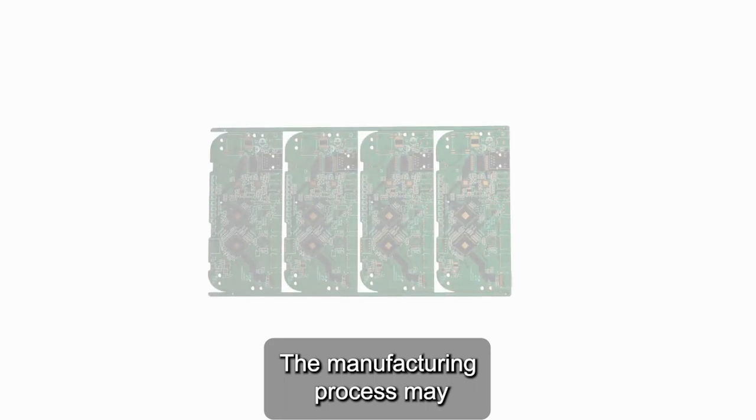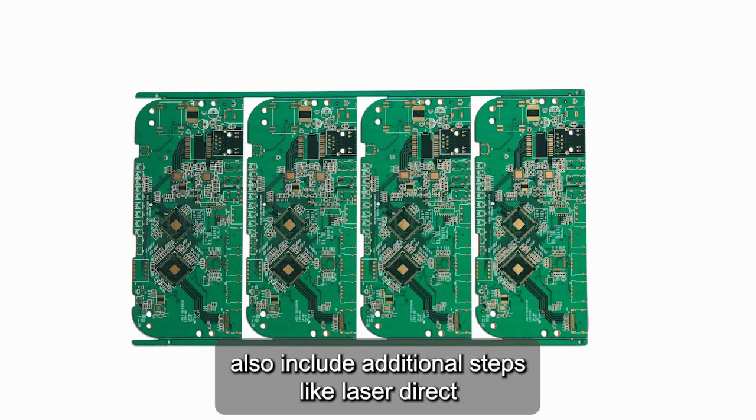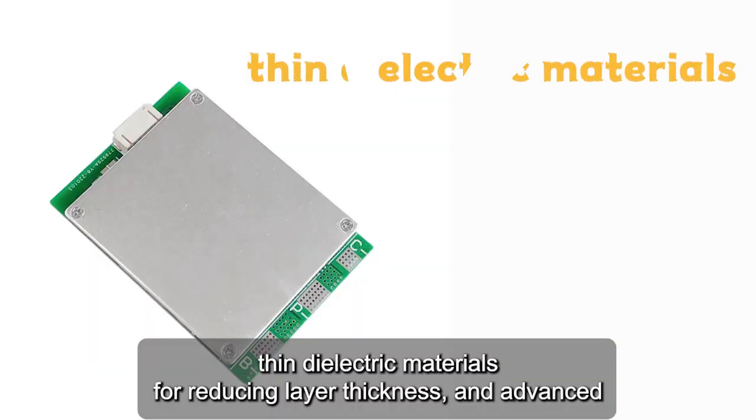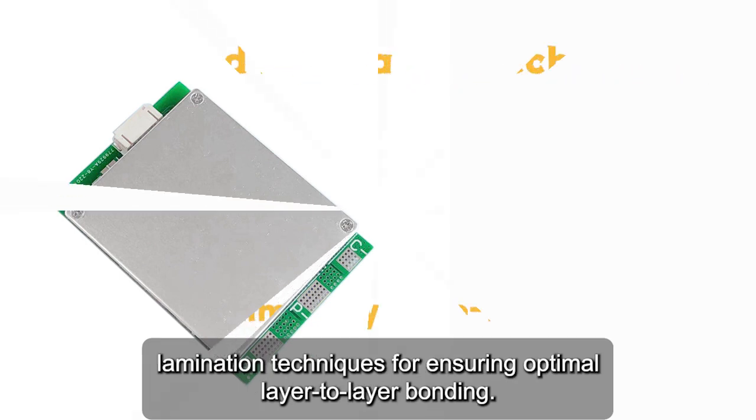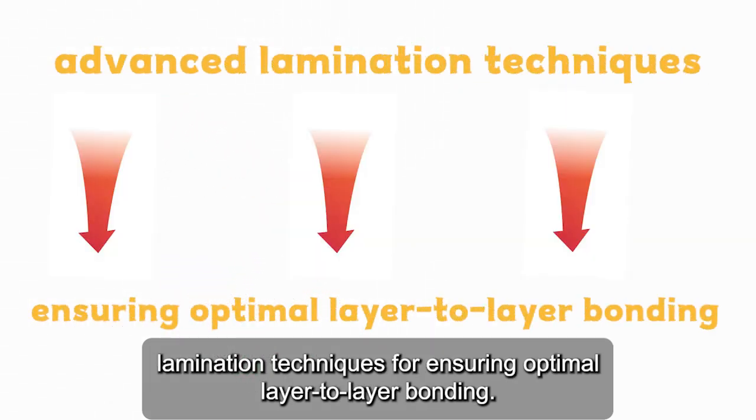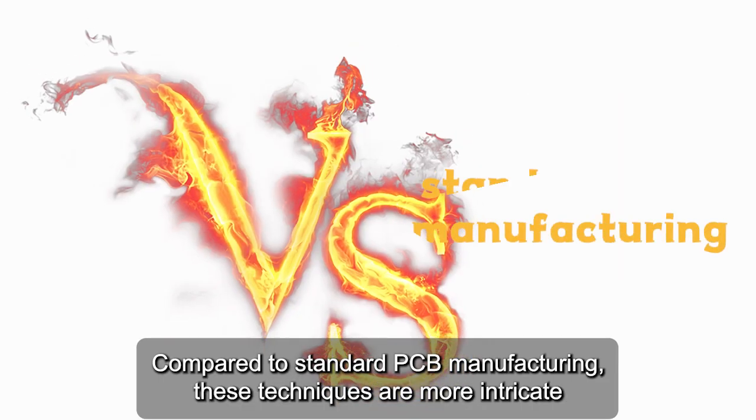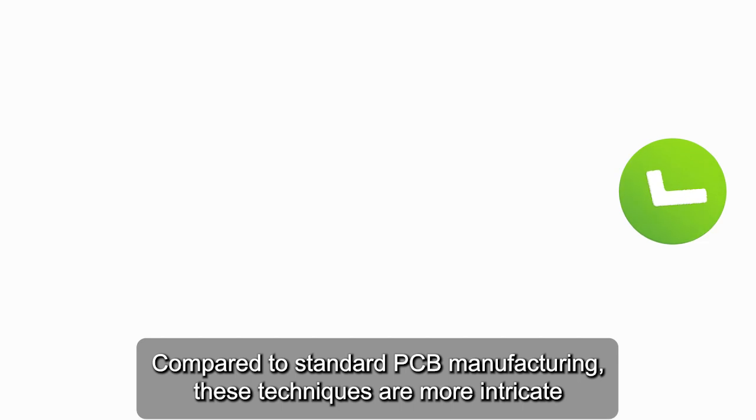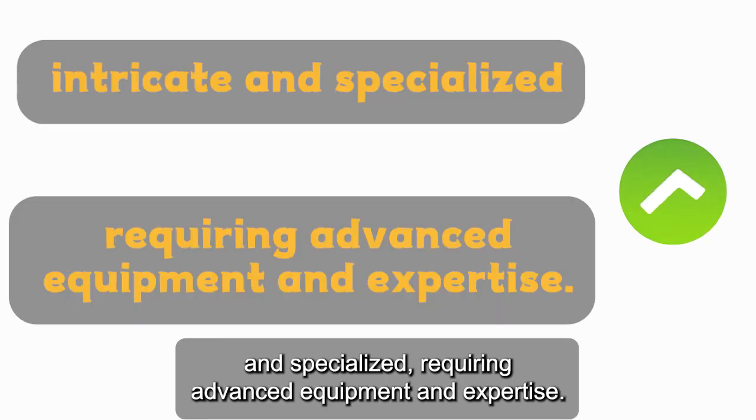The manufacturing process may also include additional steps like laser direct imaging (LDI) for precise imaging and alignment, thin dielectric materials for reducing layer thickness, and advanced lamination techniques for ensuring optimal layer-to-layer bonding. Compared to standard PCB manufacturing, these techniques are more intricate and specialized, requiring advanced equipment and expertise.